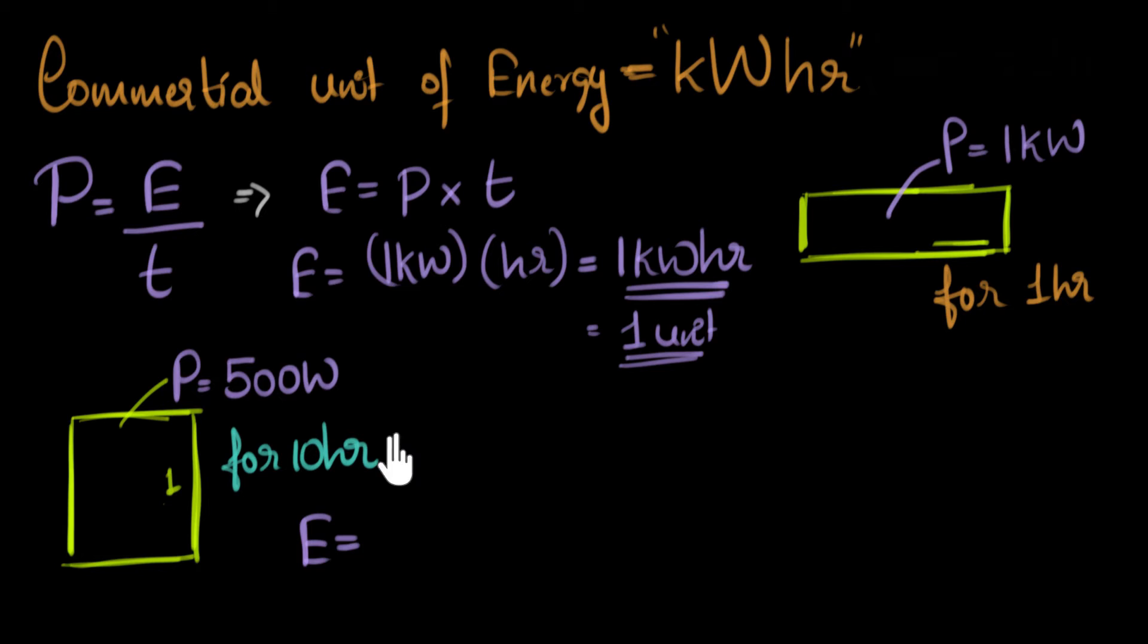Well, we do the same thing. We say energy is power into time. We substitute for power, but not in watts. We have to substitute in kilowatts. Now, 500 watt is half a kilowatt. Kilowatt is thousand, so this is half of that. So we'll substitute half a kilowatt, or 0.5 kilowatt. So here's 0.5 kilowatt. And time is 10 hours. So if you put 10 hours...